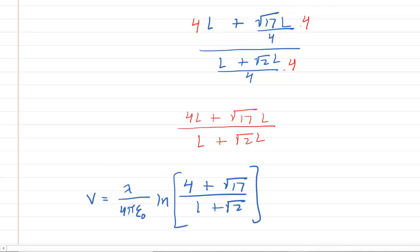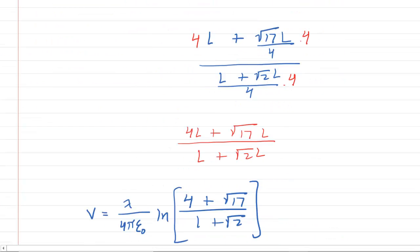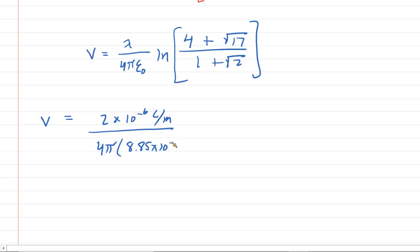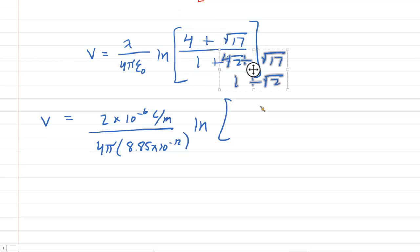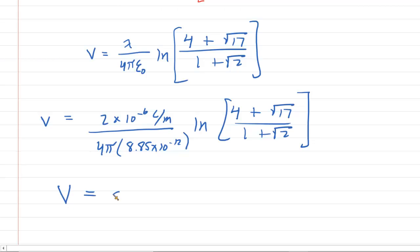Now we plug in lambda, which was given as 2 microcoulombs per meter, expressed as 2 times 10 to the minus 6 coulombs per meter. We also have 4 pi times epsilon, where epsilon is 8.85 times 10 to the minus 12, times the natural log of (4 plus sqrt(17)) over (1 plus sqrt(2)). Picking up our calculators and computing this, we get an electric potential of about 21,820 volts. That is the correct answer to the question.